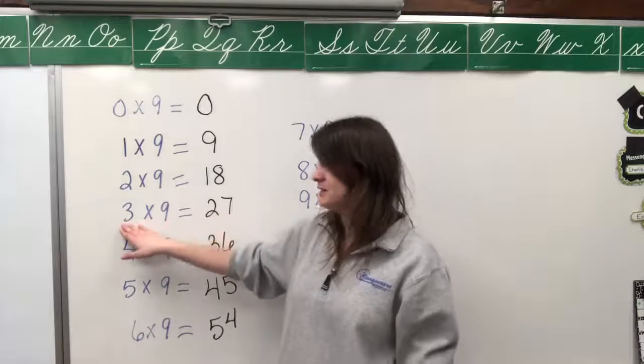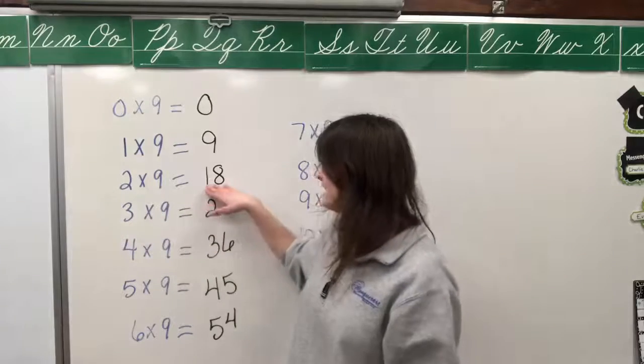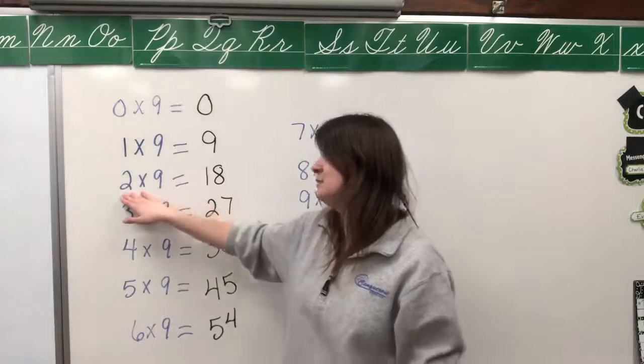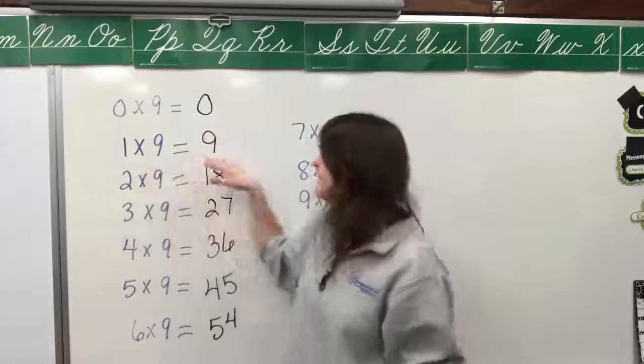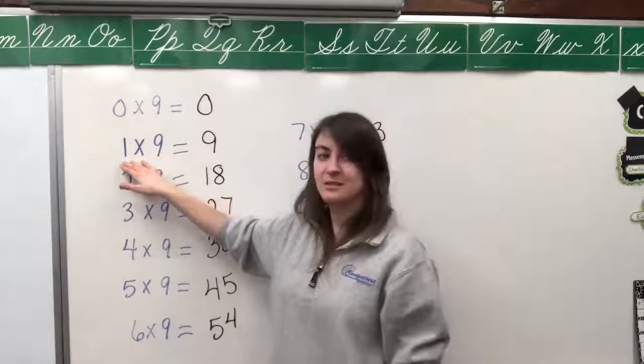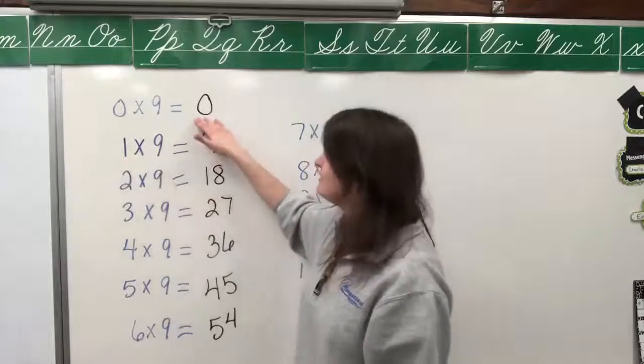Eighteen divided by nine equals two. Nine divided by nine equals one. And last, zero divided by nine equals zero.